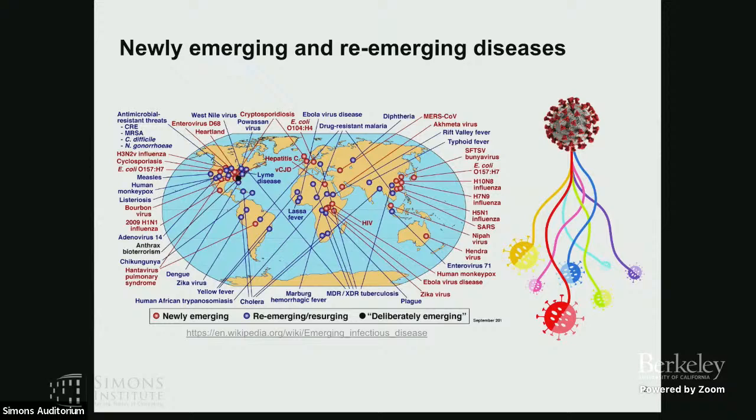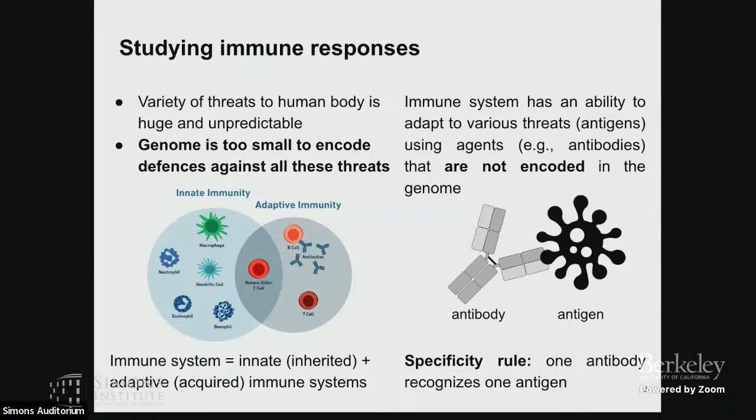We are interested in answering questions about how our body can respond to all these new threats. When we talk about fighting diseases, we mean studying immune systems. There are two types: the innate immune system, which is encoded in the germline directly and works the same way across all people, and the adaptive immune system, which is not encoded in the genome directly and is highly unique to an individual.